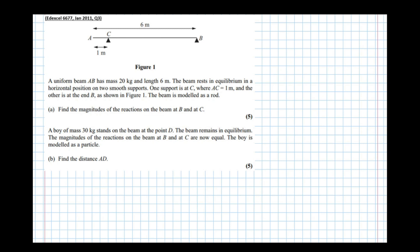In this video we're going to have a look at one-dimensional moment problems, so getting straight into the question. It says a uniform beam AB has mass 20 kilograms and length 6 meters. Instantly what I take from this...